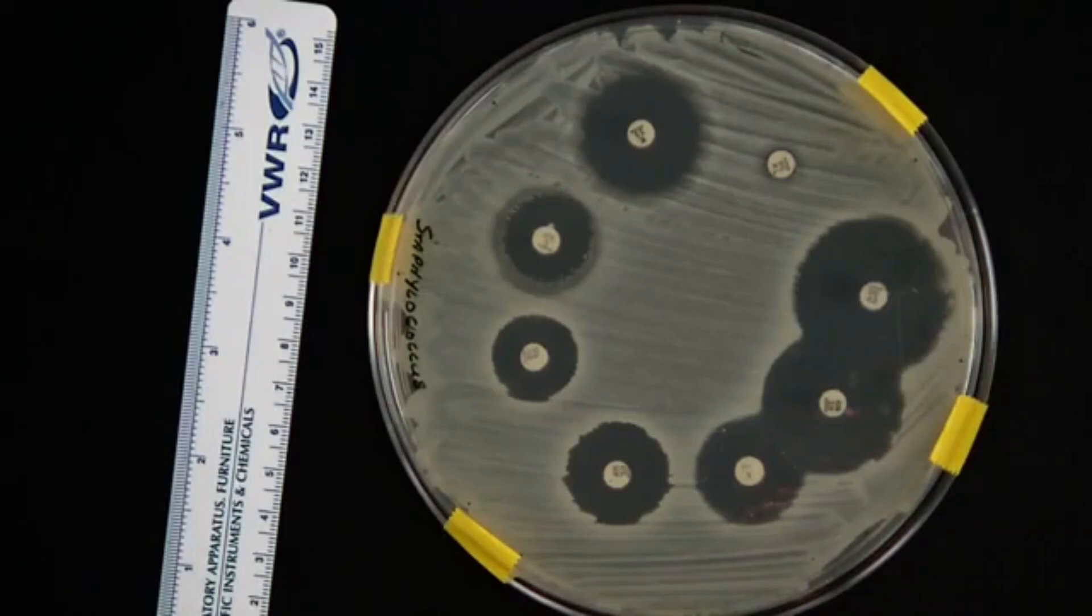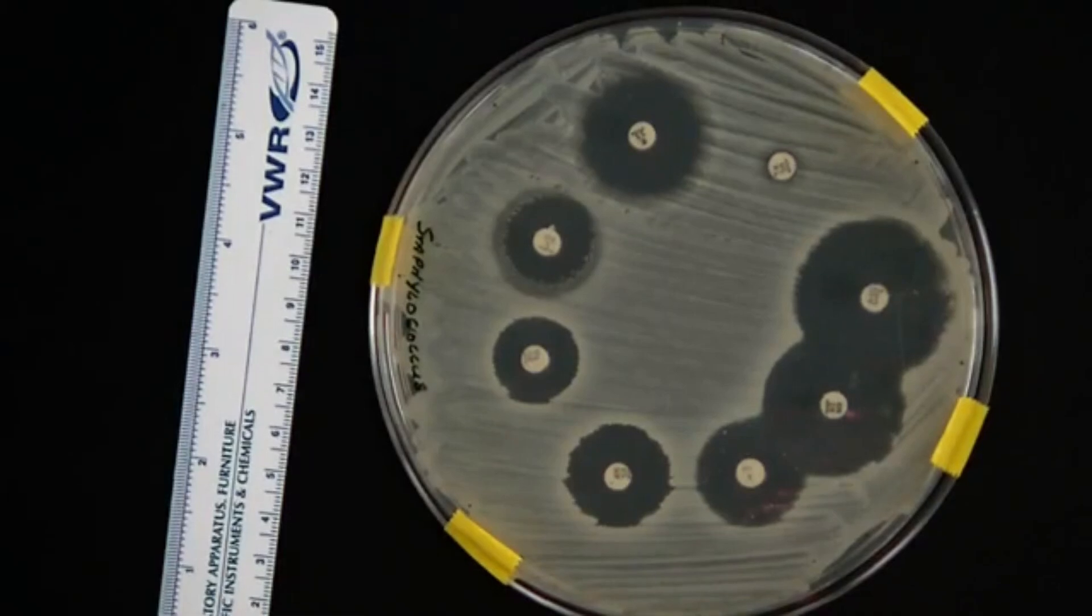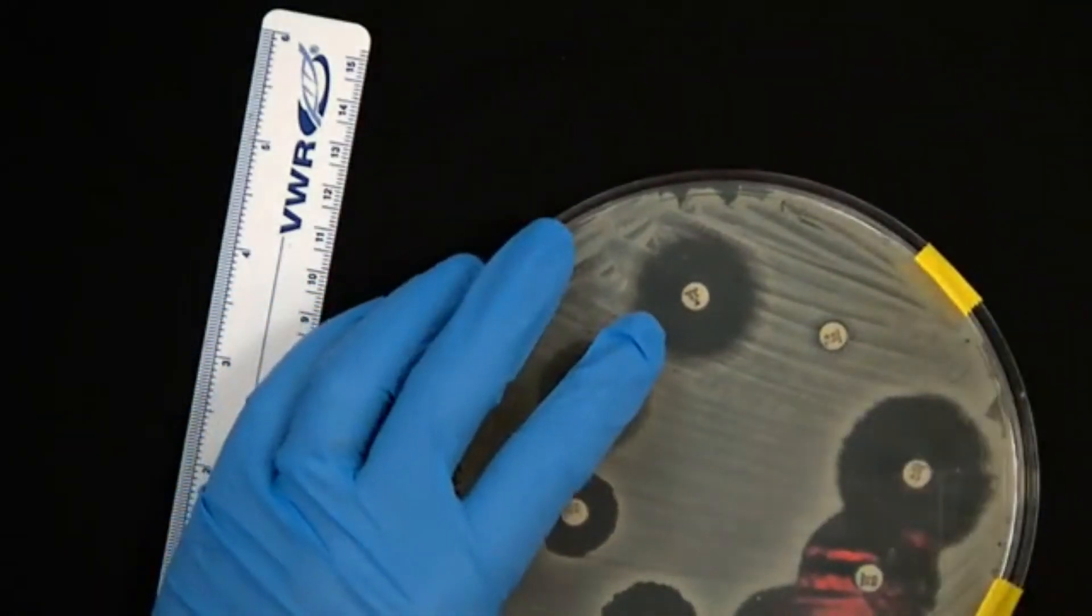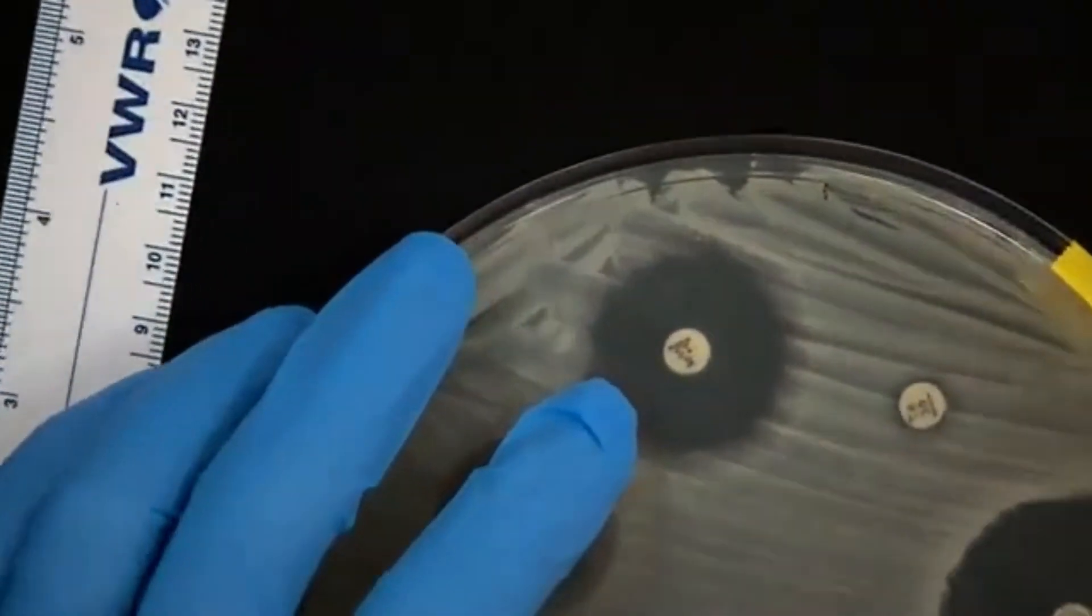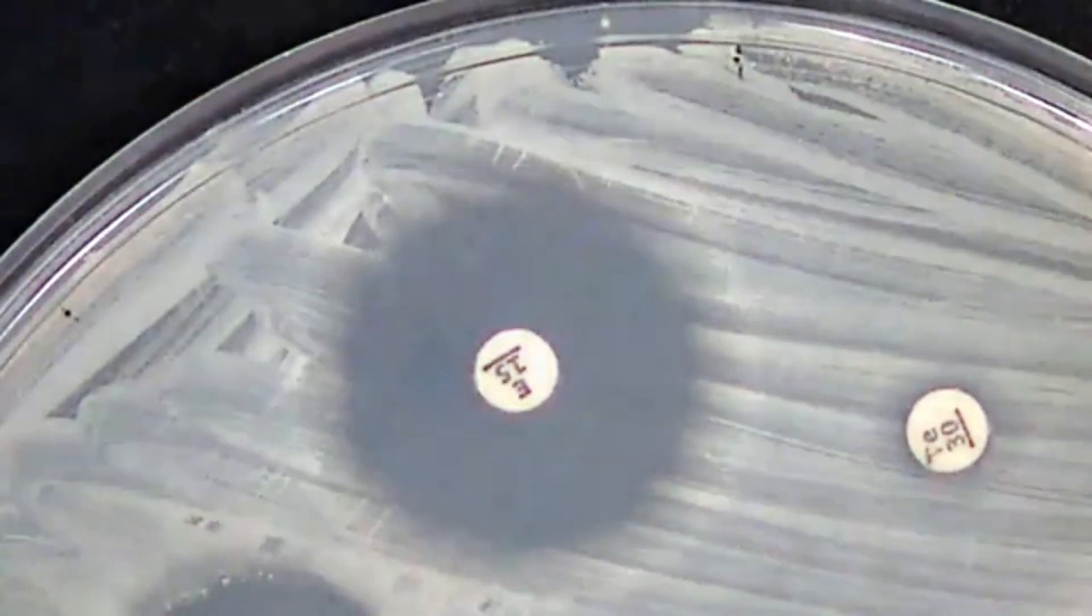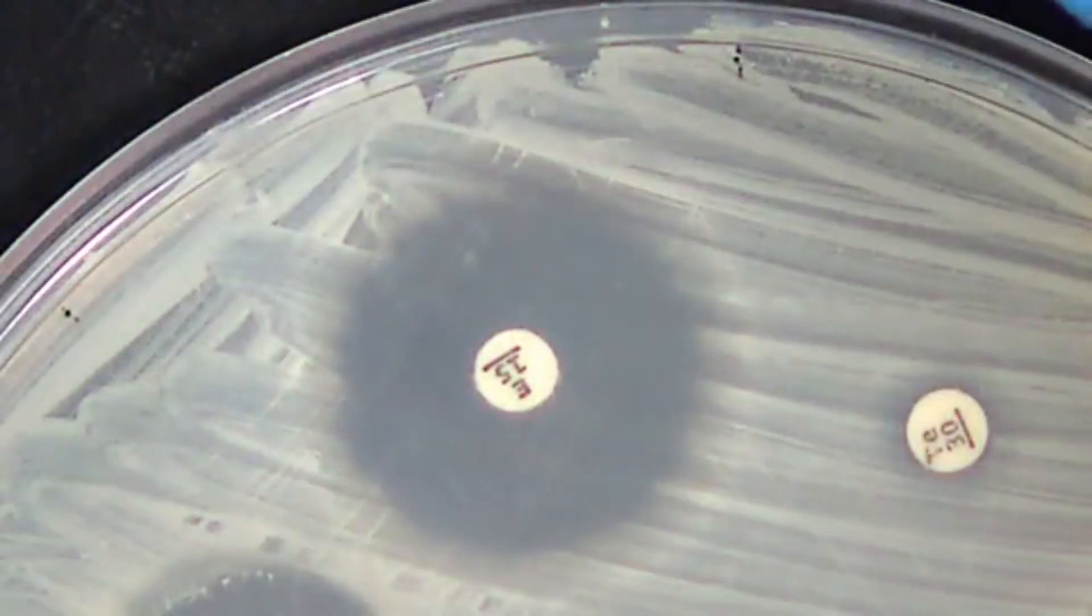After the plates have incubated, you should be able to see zones of inhibition surrounding each of the discs. So now what we want to do is determine, based on the diameter of each zone of inhibition, if the bacteria is sensitive, intermediate, or resistant.